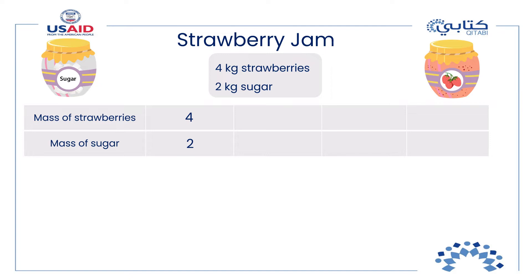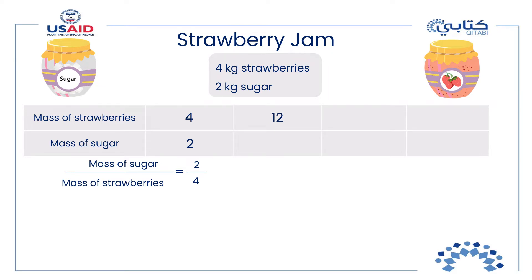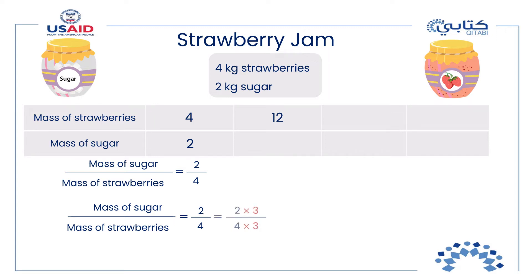Look at this table to facilitate the calculation. The ratio of the mass of sugar to that of strawberries must be the same in all the jams that my cousins and I prepare. The ratio of the mass of sugar to that of strawberries in my jam must be the same as 2 over 4. I have twelve kilograms of strawberries — triple the amount in Grandma's recipe — so I multiply two by three to find triple the amount too. I need six kilograms of sugar.